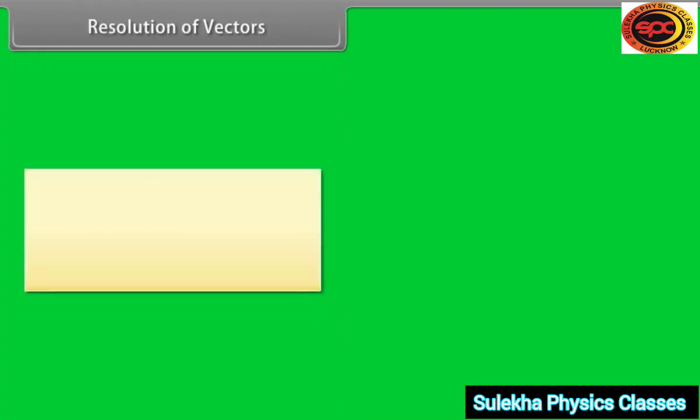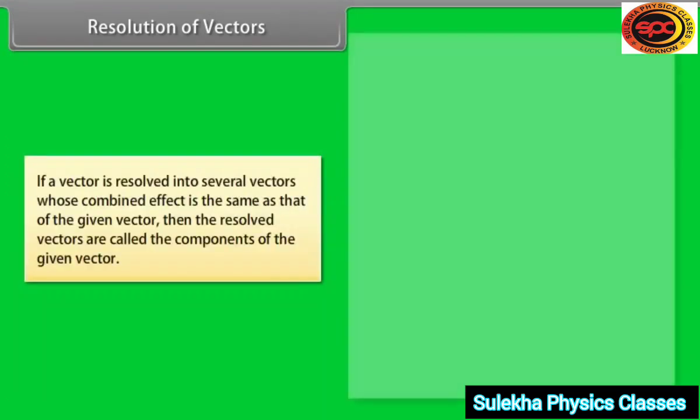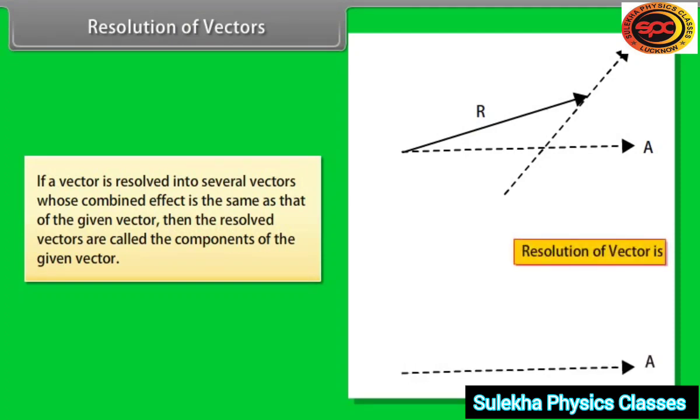The term resolution means breaking up into component parts. The process of resolution is opposite to vector addition. Now, what are the components? If a vector is resolved into several vectors whose combined effect is the same as that of the given vector, then the resolved vectors are called the components of the given vector.